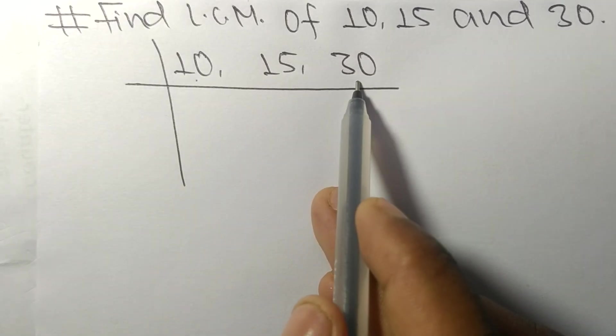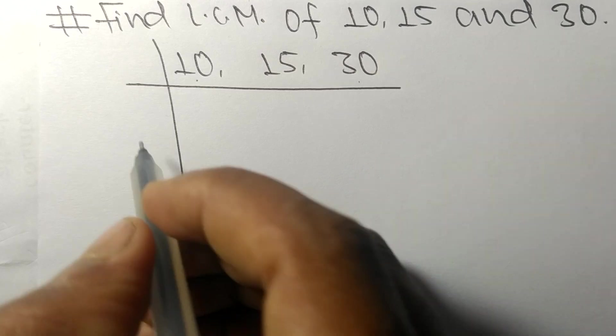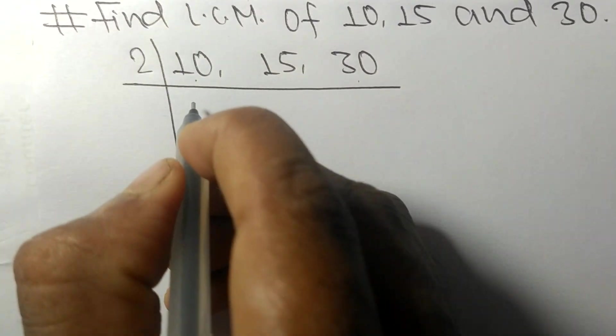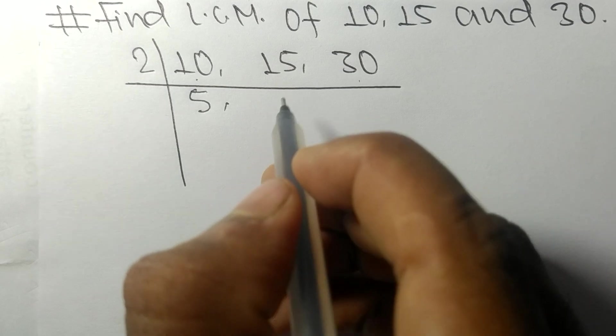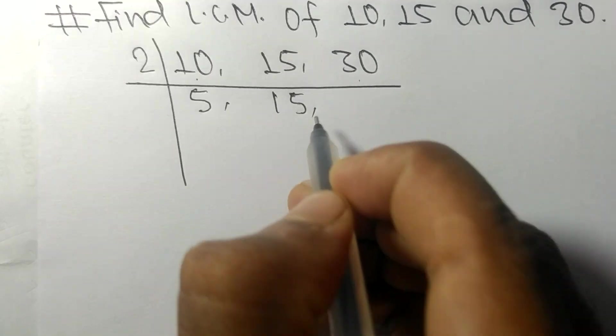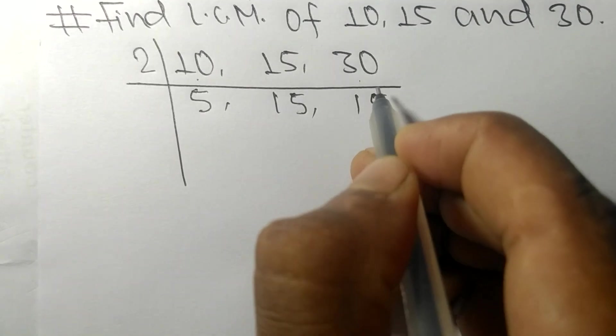10 and 30 are exactly divisible by 2. 2 times 5 equals 10. 15 is not divisible, so it stays the same. 2 times 15 equals 30.